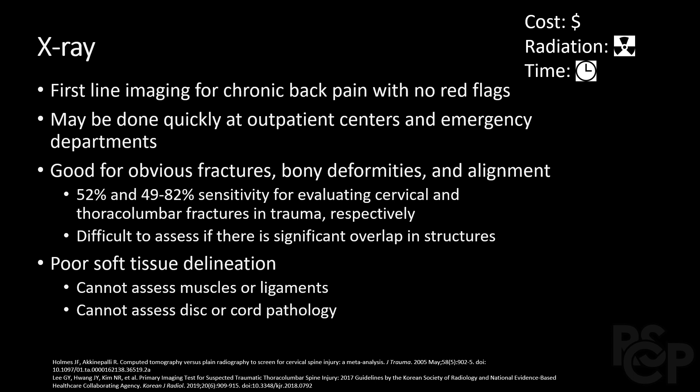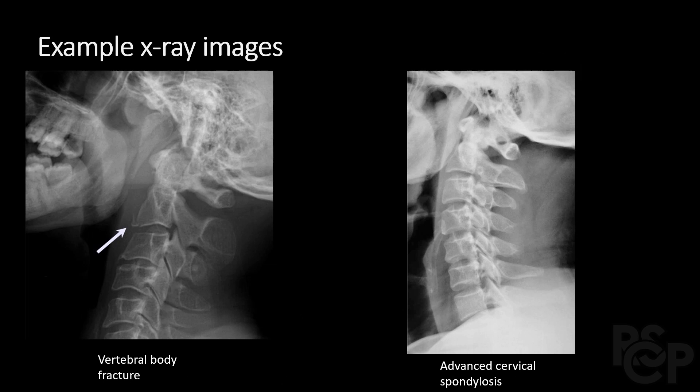X-ray should not be first-line imaging for significant trauma, as it has relatively poor sensitivity compared to CT, which has a sensitivity in the high 90s. It also has poor soft tissue detail and should not be used to assess ligaments, discs, or the spinal cord. On the left we have a vertebral body fracture as indicated by the arrow, and on the right a case of advanced cervical spondylosis, which is common in older patients.